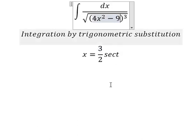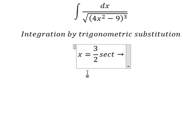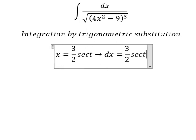Secant squared t minus 1. We change for tangent squared t, and later we simplify by dx. Next we need to differentiate both sides and we have like this.